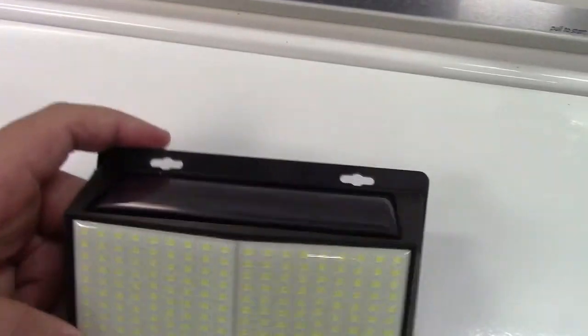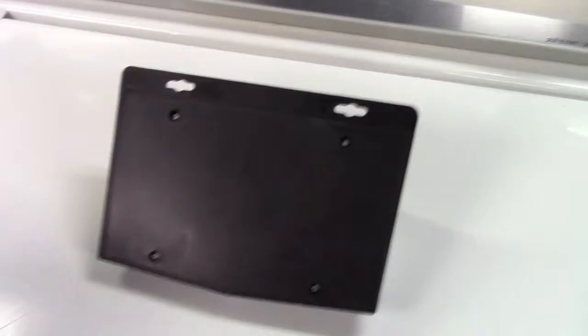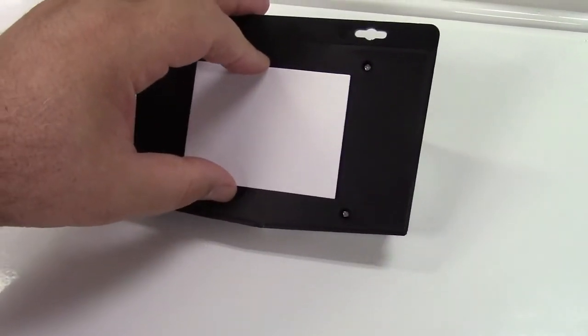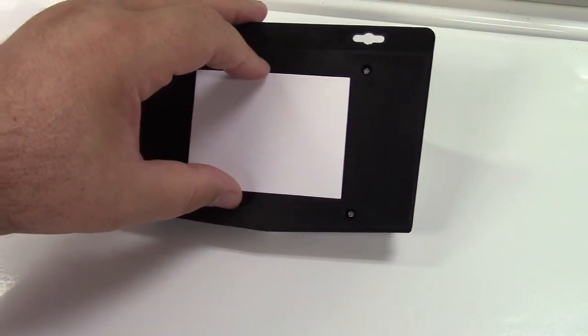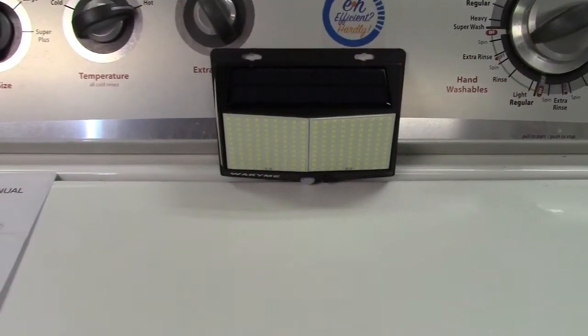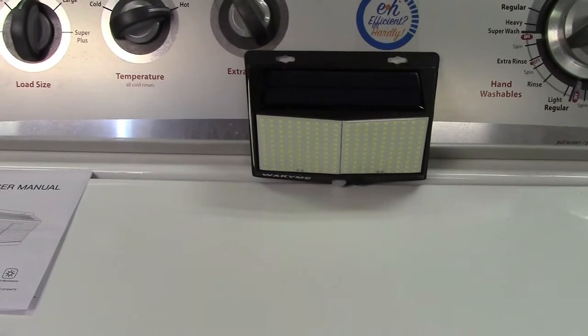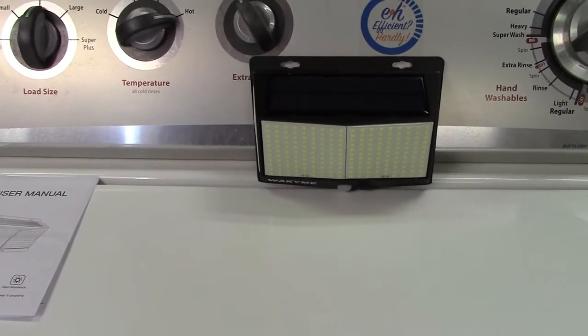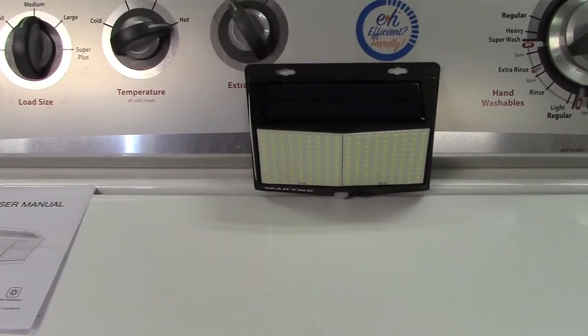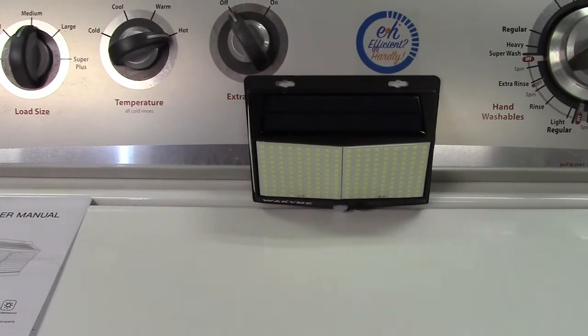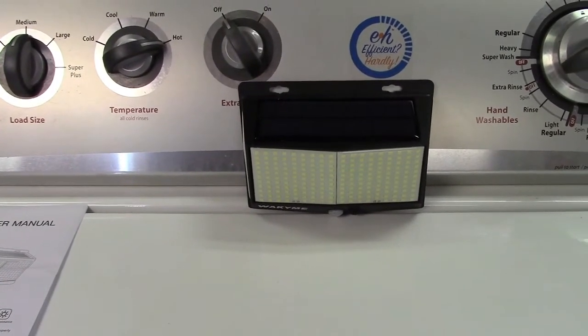You can see how to mount it with the two screw holes, or you can flip it over and use the double-stick tape pad like that to just stick it up if you'd like. So this will put out 270 degrees of light going around it like that. And at the highest brightness, it puts out 2,000 lumens, so quite a bit of light out of it as well.